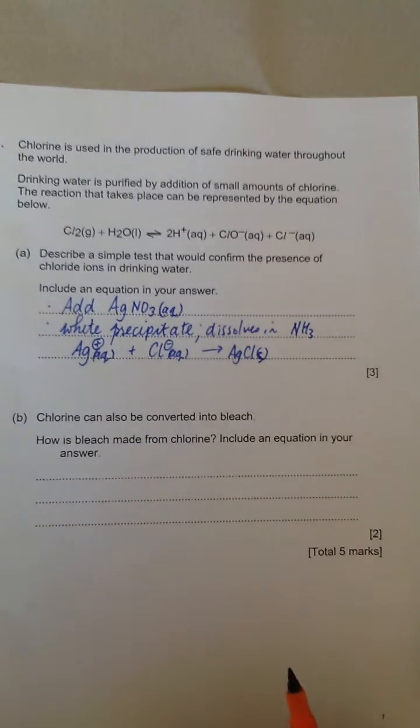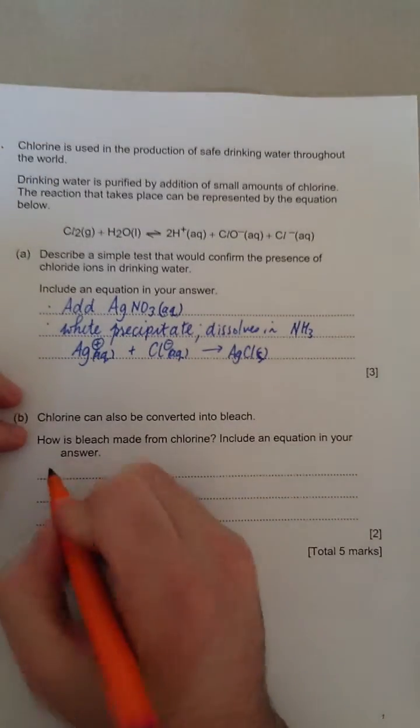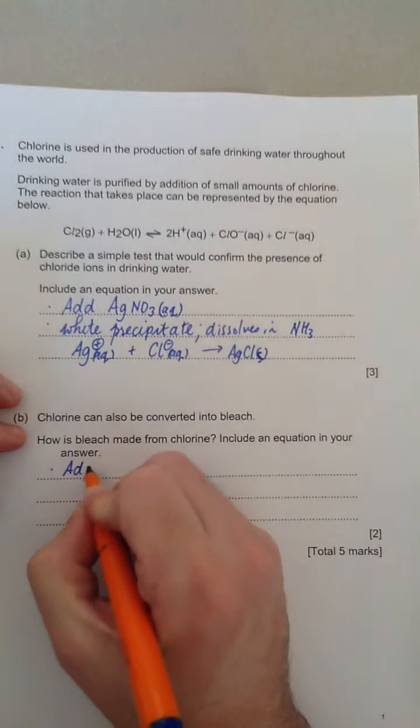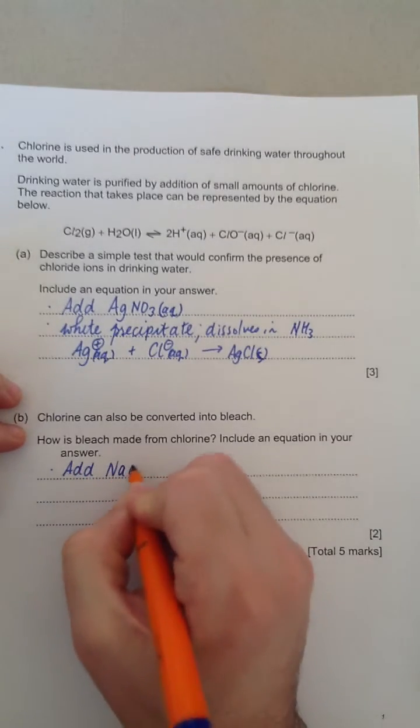So the first mark is, tell me what you need to do. Second mark is, write in the equation. So the first part is you need to add NaOH, you add sodium hydroxide.